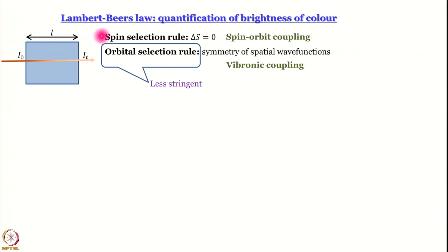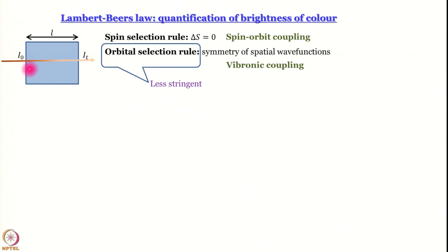The length of the sample along the direction of propagation of light is L. The intensity of light impinging on the sample is I₀ and the intensity of light transmitted from the sample is I_t. As the shading of the arrow shows, as light gets absorbed by the molecules in the sample it loses intensity — some of the light is absorbed so it does not go out, and intensity decreases; an extinction to some extent takes place.